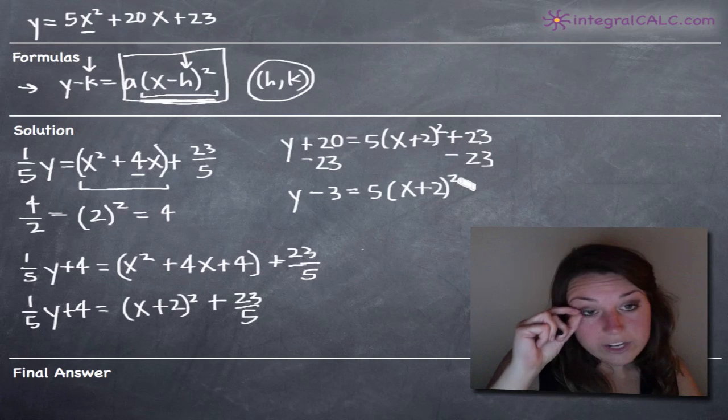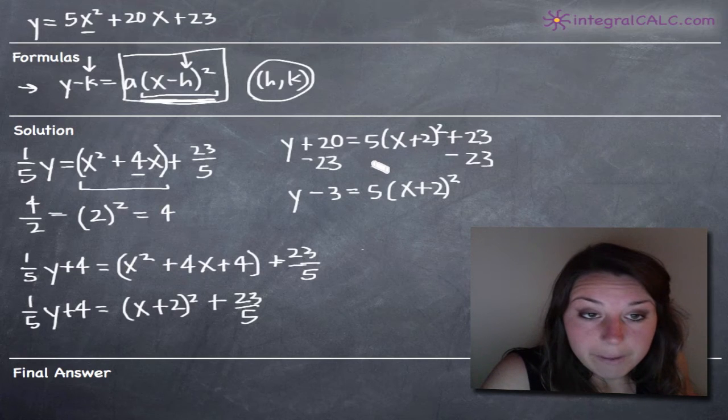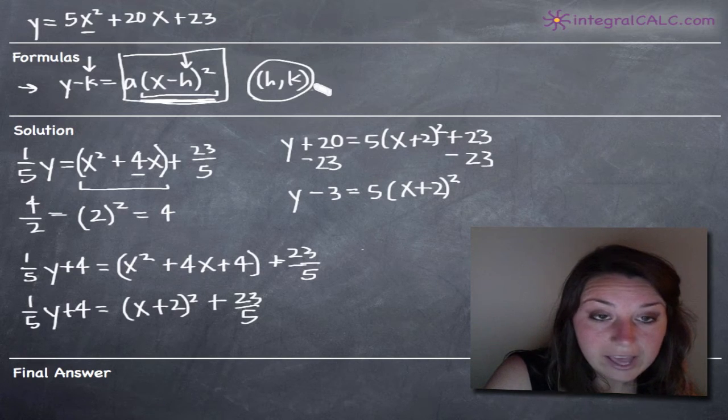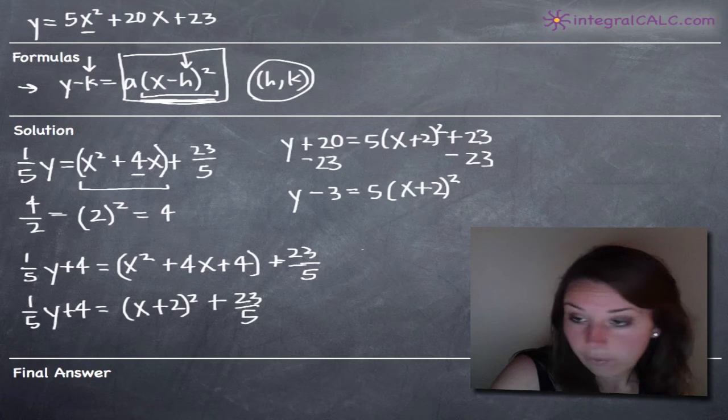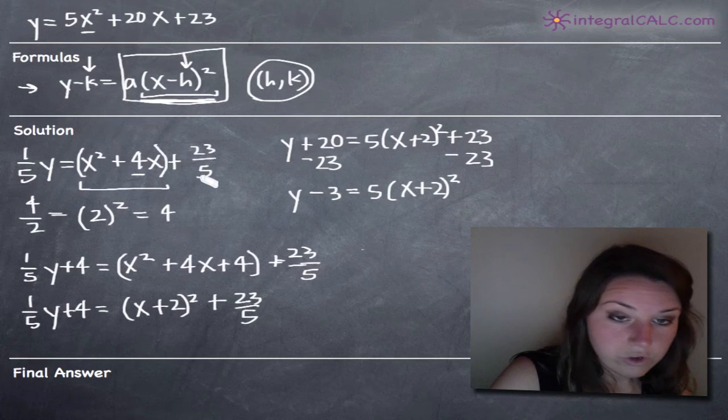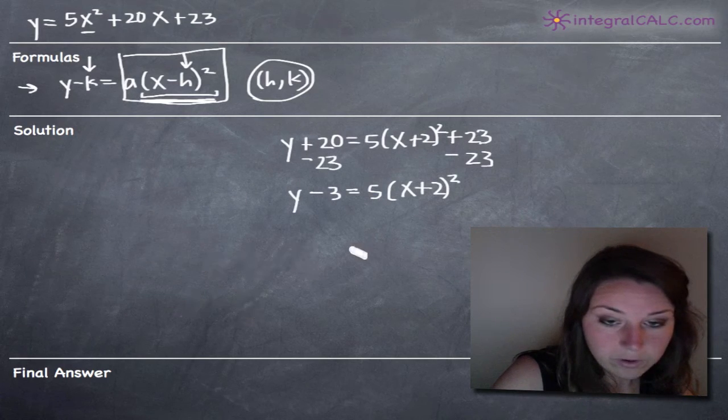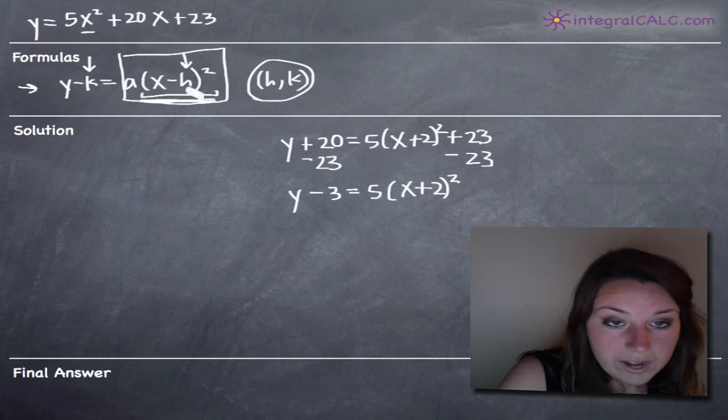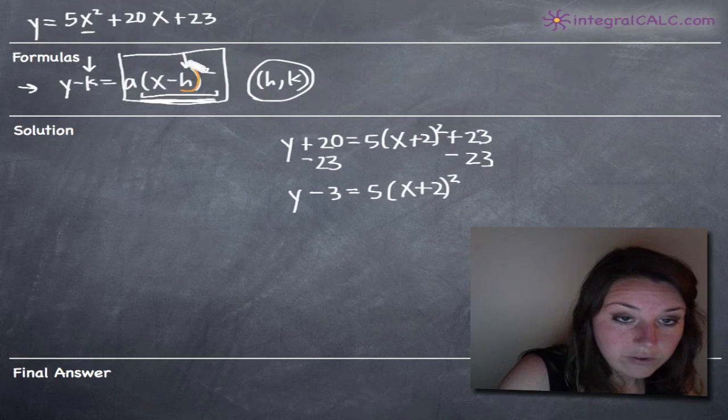And now we're in great shape because this is looking exactly like our formula. But in our formula, we've got h and k, which is going to be the coordinates of our vertex. If we pull out h and k from our new equation right here, let's go ahead and erase this. We don't need it anymore. If we pull out h and k, you can see we've got h. Let me grab a different color. We've got h right here.